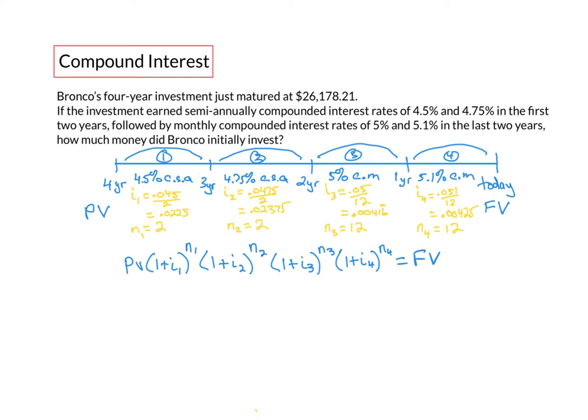All right, let's substitute our values into our equation. So present value is what we're looking for. This would become 1 plus 0.0225 to the exponent 2, times 1 plus 0.02375 to the exponent 2.